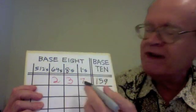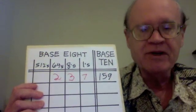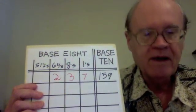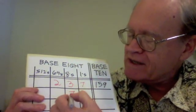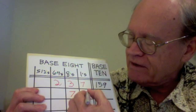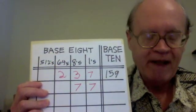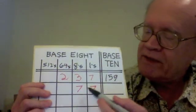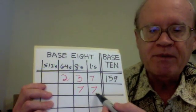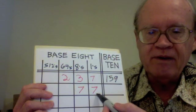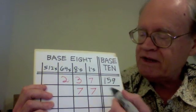So our 159, written in base 8, reads 2, 3, 7. To take another example, suppose we had 7, 7 as a base 8 number. What is the value of that? Well, this 7 means 7 times 8, which is 56. This 7 means 7 times 1, which is 7. 56 plus 7 is 63.